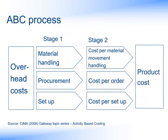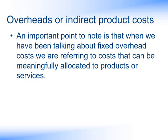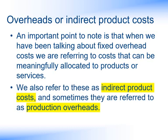In the activity-based costing process, we take our total overheads and break them down into different elements. So in stage one, we're looking at the costs of the activities, such as materials handling, procurement, and set-up. We can then use the most appropriate basis for allocating those costs to the products. For example, procurement might be a cost per order, or the set-up would most logically be the cost per set-up. One important point to note is that when we've been talking about fixed overhead costs, we're referring to costs that can be meaningfully allocated to products or services. These are also referred to as indirect product costs, or sometimes production overheads.